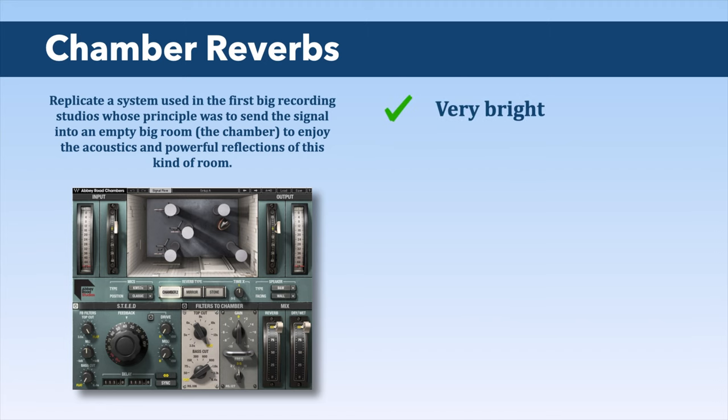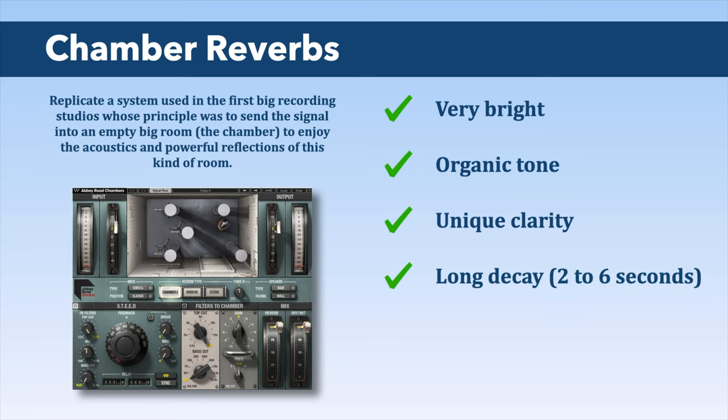Chamber reverbs are quite similar to hall reverbs in how they work, but the color and tone are completely different — chamber reverbs are brighter and more organic. The clarity of a chamber reverb is completely different from any other type. The decay time can vary greatly depending on the size of the room, but most are between two and six seconds. The highly reflective walls make chamber reverbs very special in the power of their reflections.